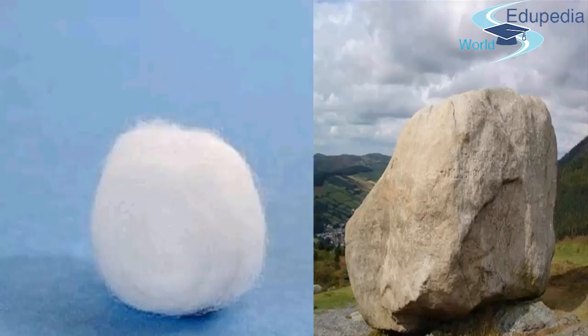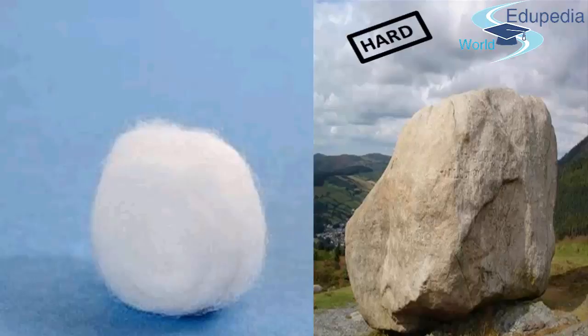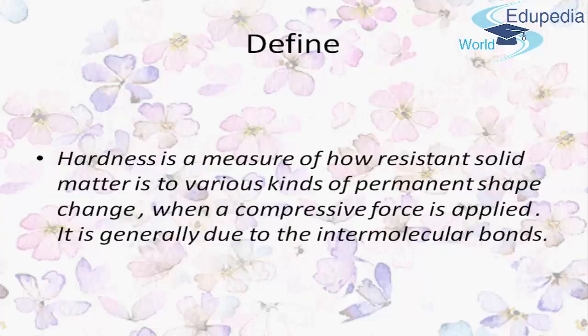Let's look at two different images. If I ask you which one is harder, you would say the big stone — because for a layman, the harder material is the one that endures more. Keeping all these definitions in mind, the general definition of hardness is: hardness is a measure of how resistant solid matter is to various kinds of permanent shape change when a compressive force is applied. It is generally due to the intermolecular bonds.